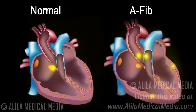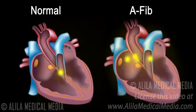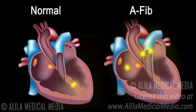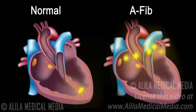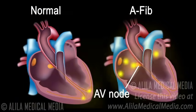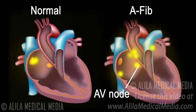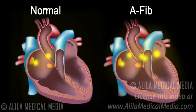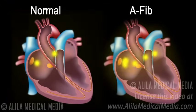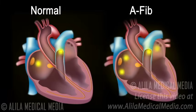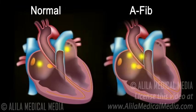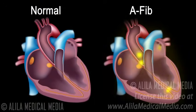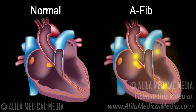Although the atrial rate during atrial fibrillation can be extremely high, most of the electrical impulses do not pass through the atrioventricular, or AV node, to the ventricles. This is due to the refractory properties of the cells of the AV node. Those that do come through are irregular, so the ventricular rate, or heart rate, is therefore irregular and can range from slow, less than 60, to rapid, more than 100 beats per minute.